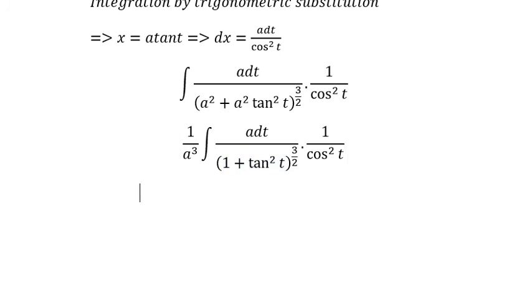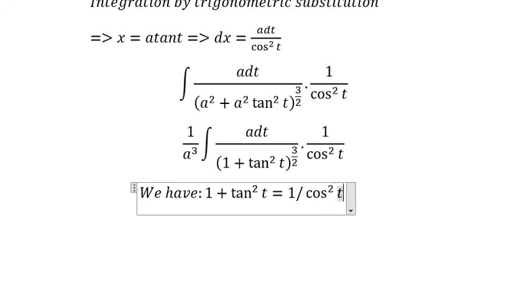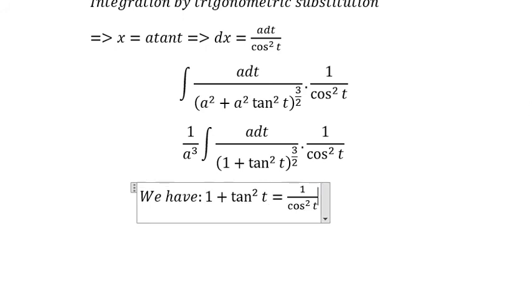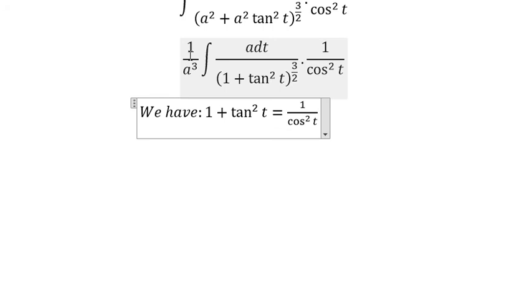We have the formula: 1 + tan² t equals 1 over cos² t. So we will replace this one.